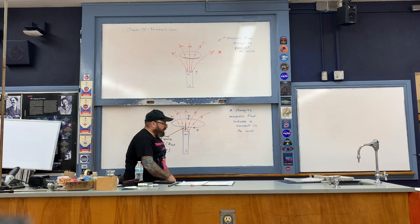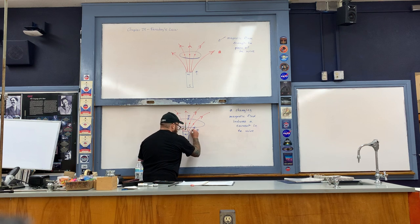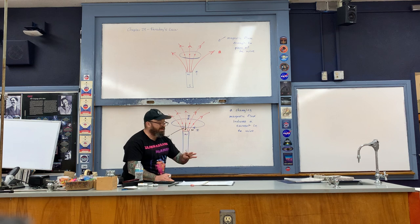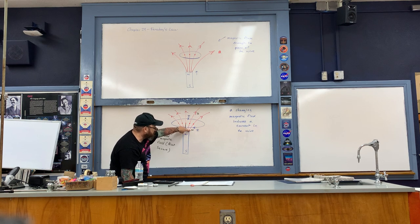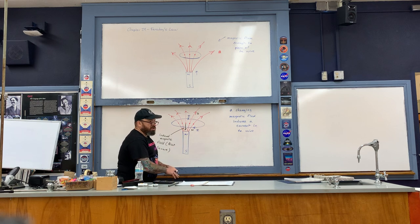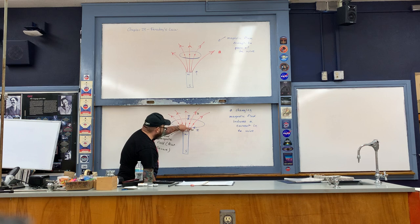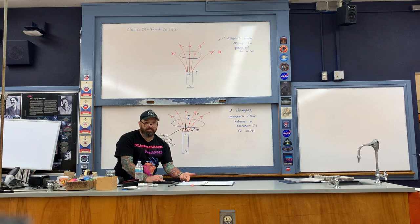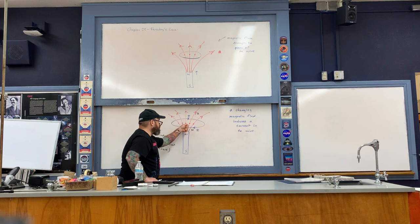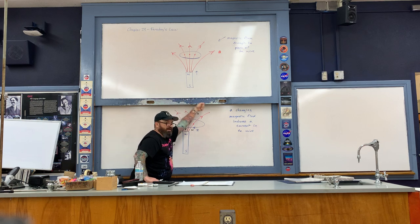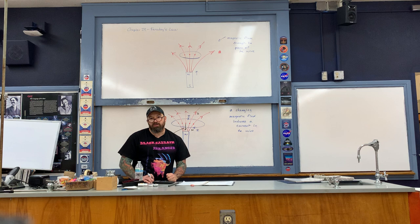Because that induced magnetic field points downwards, below the loop of wire it behaves like a north magnetic pole, and above the loop it behaves like a south magnetic pole. So we have the north pole of the bar magnet pushing against the north magnetic pole induced below the loop of wire. If the current flowed in the opposite direction, we'd get a south pole below, which would attract the north pole and pull it through — that can't happen, as it would violate conservation of energy.